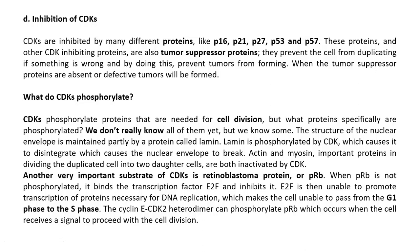Let us understand this a little diagrammatically so you will understand it better. When Cyclin E, in combination with CDK2, forms a heterodimer and can phosphorylate the Retinoblastoma protein, it will signal that the cell needs to proceed — to be able to pass through cell division.